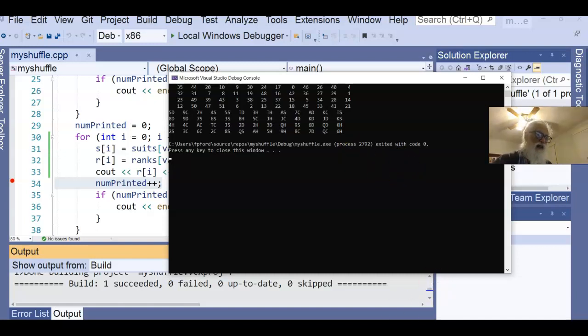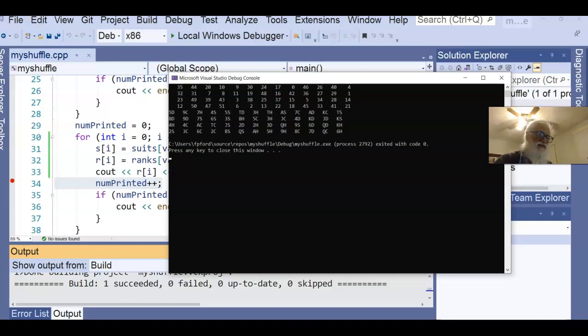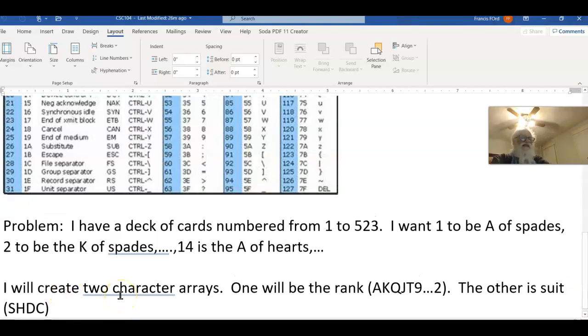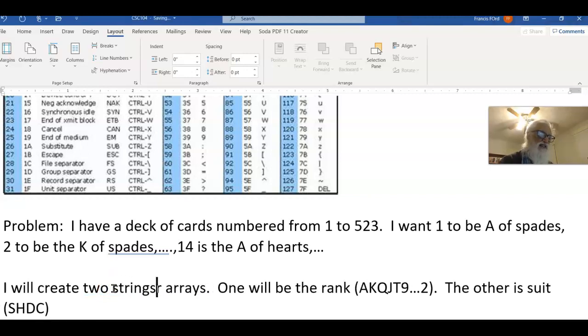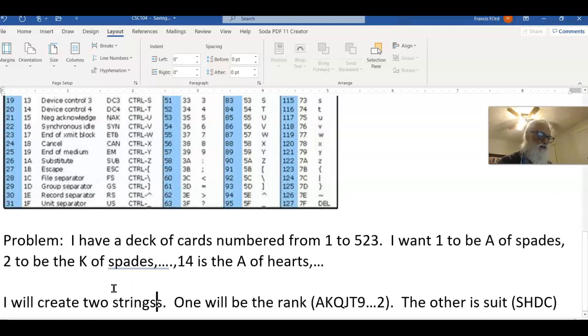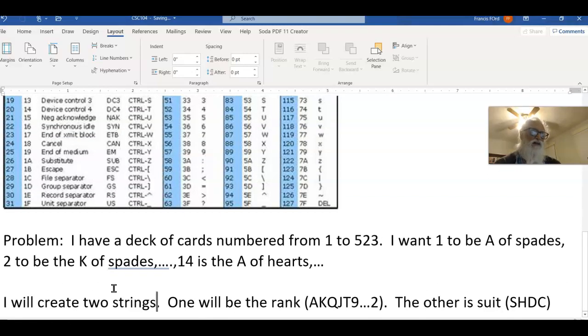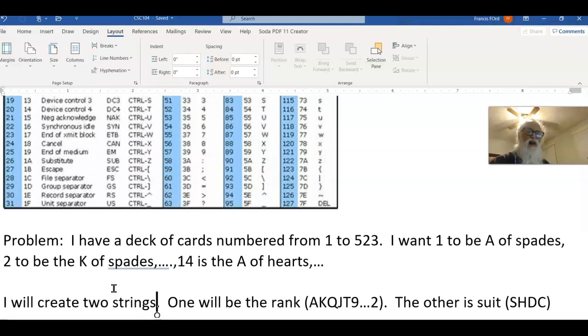So to do that, what I'm doing, I think it may have been a little different than what I said I was going to do. I'm creating two character arrays. Now, those are called strings. I'm going to create two strings. One will be the rank, the other will be the suit. And what I'm going to do is use my number to pick out one of those.